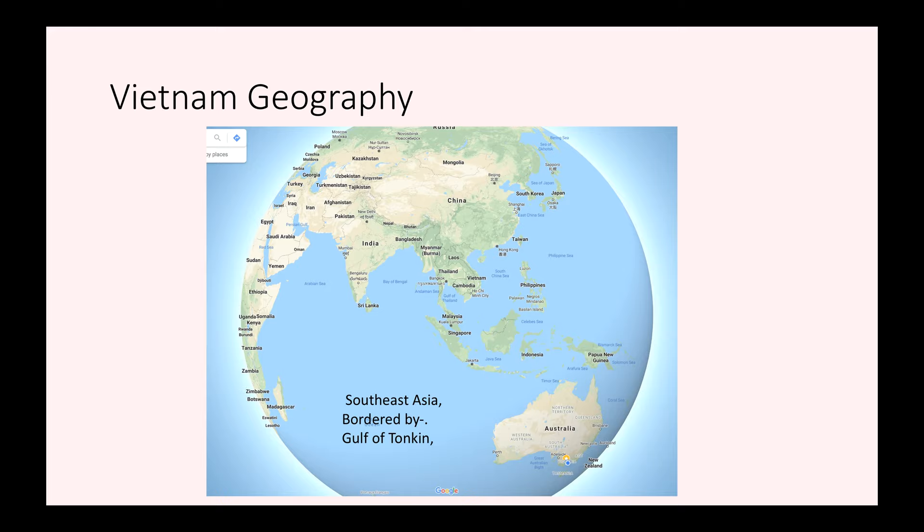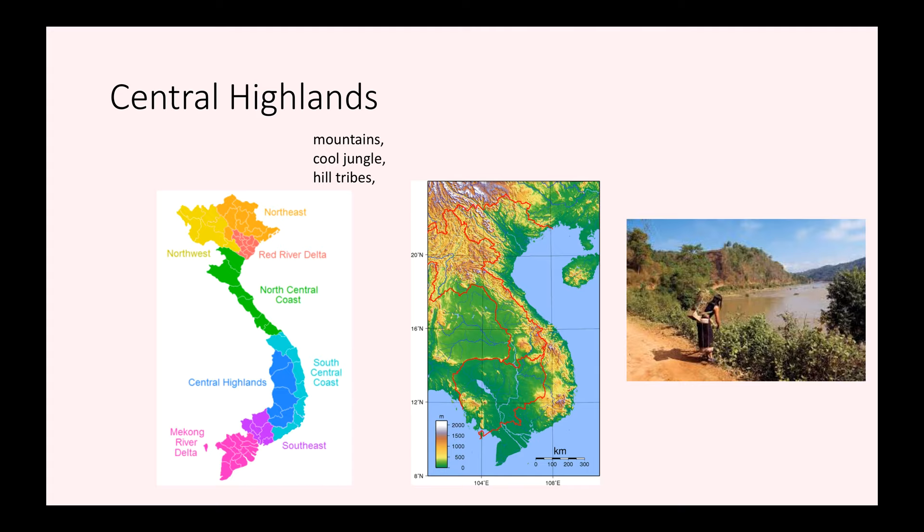So try to remember that Vietnam is part of Southeast Asia. It's bordered by China, Laos and Cambodia. And it has coast in the Gulf of Tonkin and in the South China Sea.